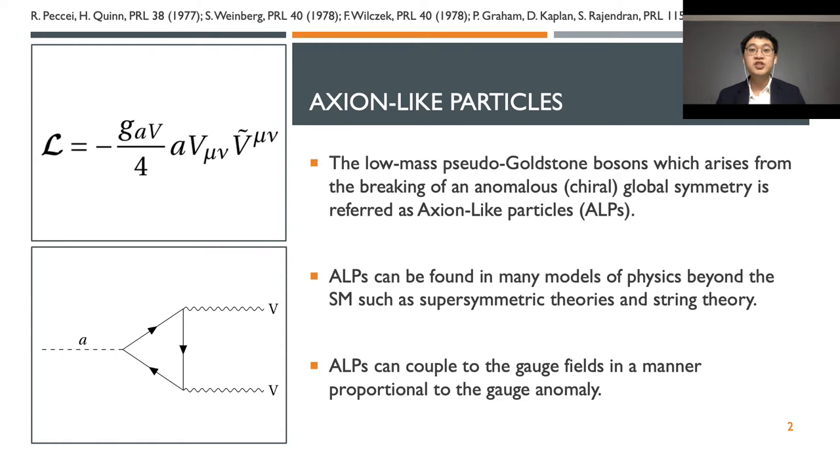Axion-like particles are low-mass pseudo-Goldstone bosons which arise from anomalous global symmetry breaking such as chiral symmetry breaking. They appear in many beyond standard model phases like supersymmetry and string theory. They can also be a solution for the strong CP problem.